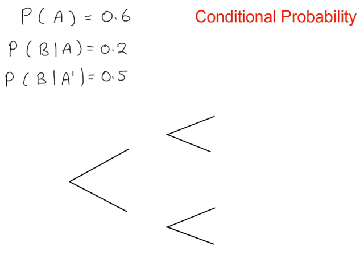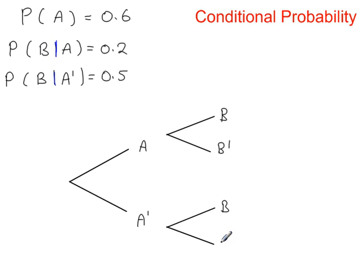In this example we have two events, A and B, and we have conditional probabilities. The probability that event A happens is 0.6. The probability that event B happens, given that A has happened, is 0.2. And the probability that event B happens, given that A does not happen, is 0.5. So the tree has branches A, A', and then B, B' under each.